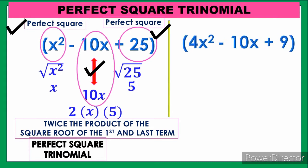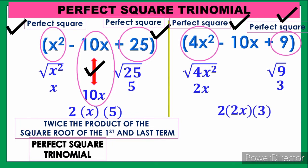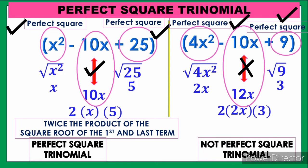Next: 4x² minus 10x plus 9. The first term, 4x², is a perfect square, and the last term, 9, is also a perfect square. For the middle term: square root of 4x² is 2x, square root of 9 is 3. Then 2 times 2x times 3 equals 12x. The middle term of the trinomial is 10x, which does not match 12x, so this is not a perfect square trinomial.